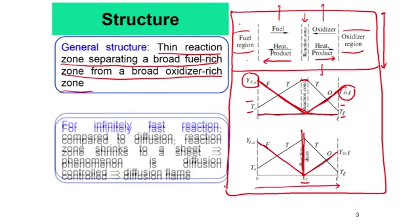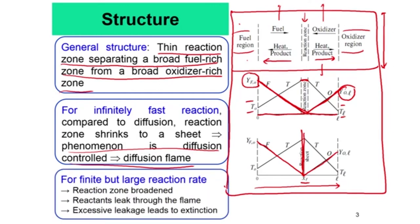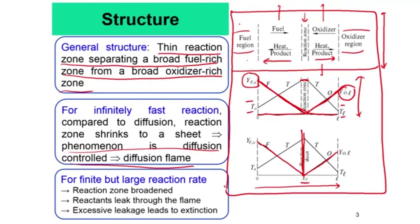For infinitely fast reaction compared to diffusion — the reaction rate need not be infinitely fast, we just consider it infinitely fast compared to diffusion — the reaction zone shrinks to a sheet and the phenomenon becomes diffusion controlled. When we consider a finite but large reaction rate, the reaction zone becomes broadened and reactants leak to the flame; excessive leakage will lead to extinction. This is the reactant leakage phenomenon — you see that Y_F does not go to zero here, neither does the oxidizer go to zero.